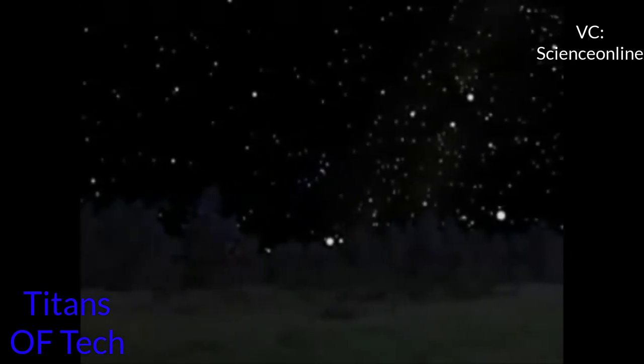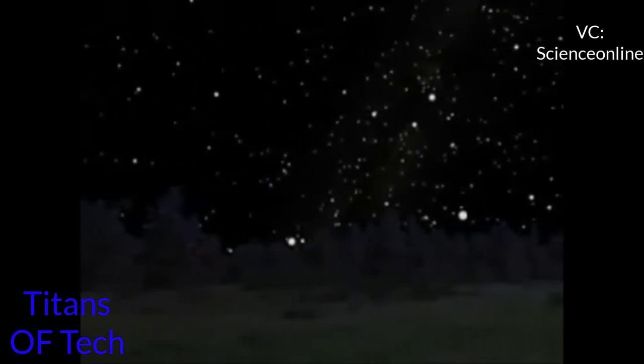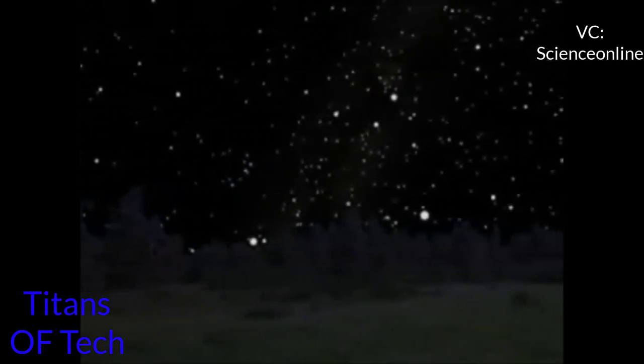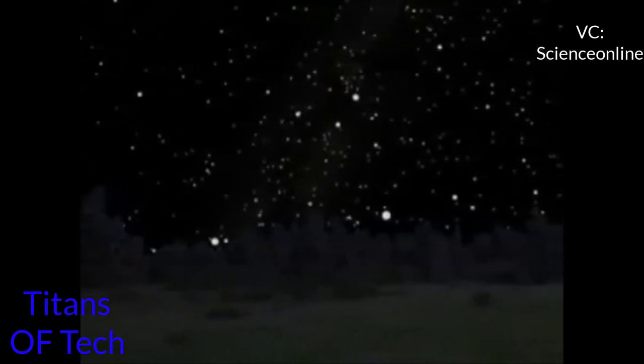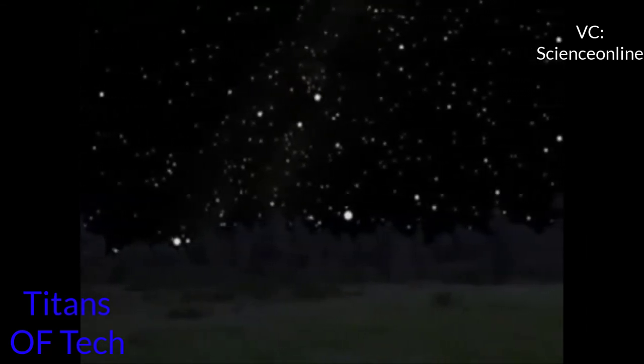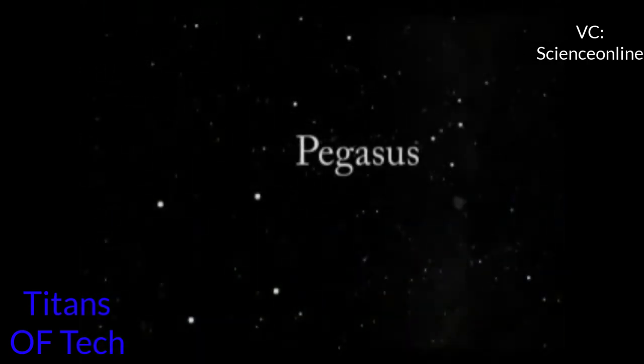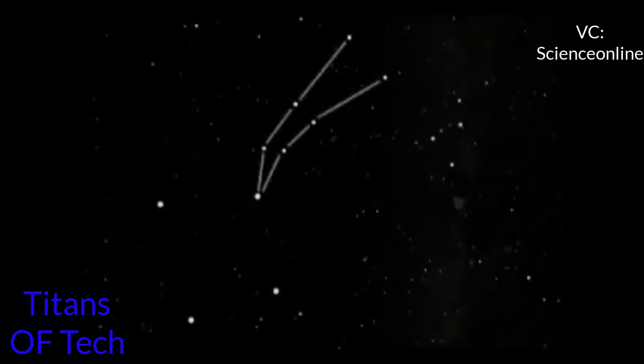Another method for locating this galaxy is to use the constellation Pegasus, the flying horse from Greek mythology. The dominant feature of Pegasus is a large square created by four bright stars. Extending from one corner of Pegasus, you will find a double trail of dimmer stars.